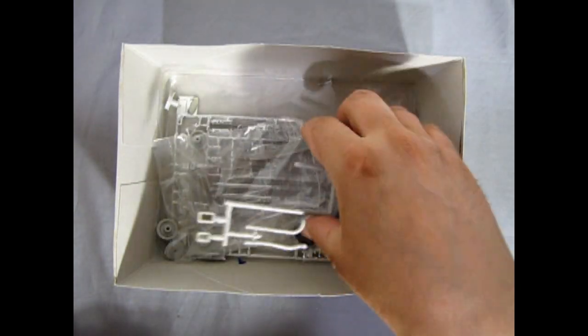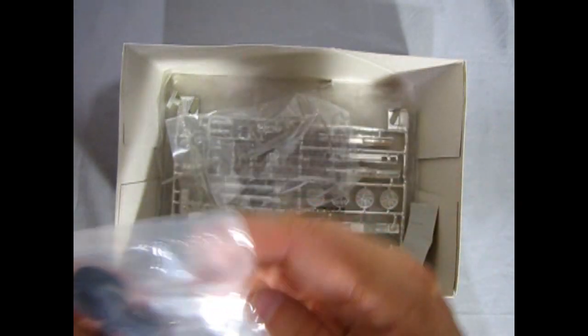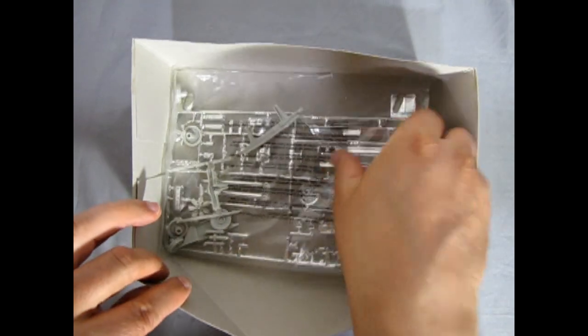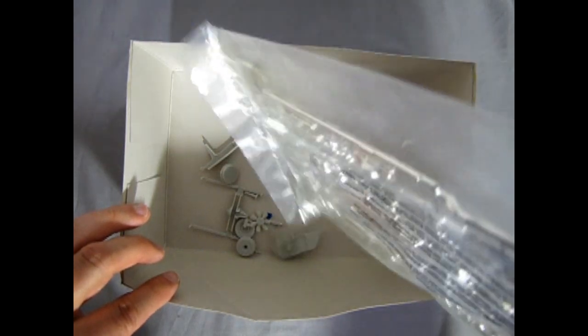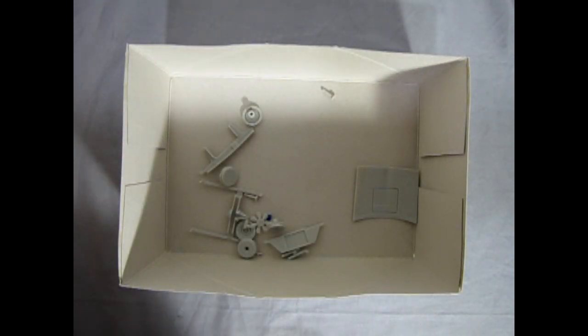In a Ziploc bag we've got some more of the gray plastic components. There's our engine and whatnot. Then we've got our wheels and tires in bags, our glass, and then our chrome parts. Everything has fallen off all over the place, so you get a nice idea of what's in this box.